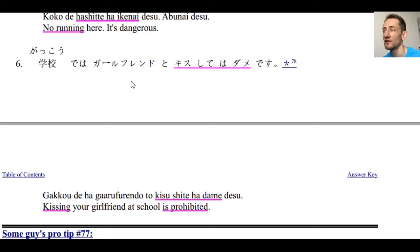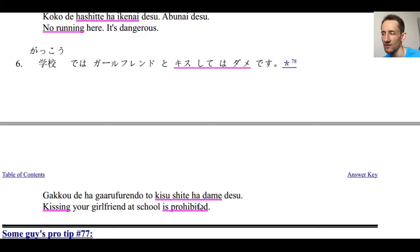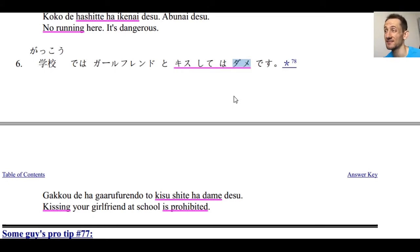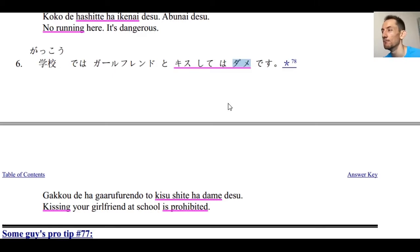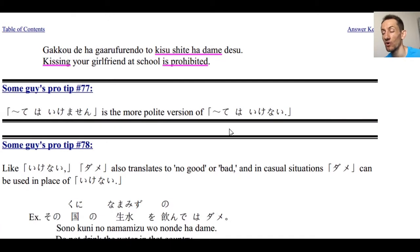Number six: Gakkou de wa, girlfriend to kissu shite wa dame desu — kissing your girlfriend at school is prohibited. Here we see dame used instead of ikenai. Dame, as many anime fans know, means something is no good or bad. So shite wa dame is a more casual, and sometimes even stronger-feeling, version of shite wa ikenai. Same meaning, just more casual.